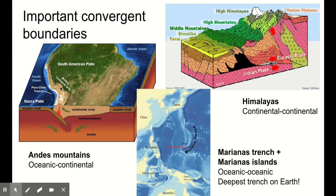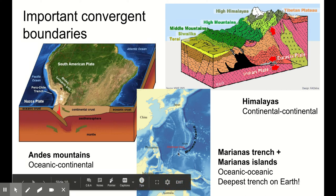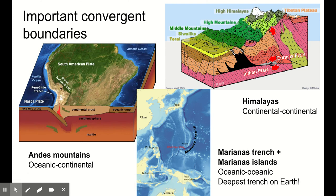Here is an oceanic-oceanic convergent boundary. We've got the Eurasian Plate and the Pacific Plate colliding right along this line. You can see what's being formed here — that is a deep ocean trench, and that is the Marianas Trench, along with the Marianas Islands. It's a volcanic island arc formed by that subduction zone. The Marianas Trench is the deepest ocean point on Earth — our deepest ocean points are formed at our subduction zones.